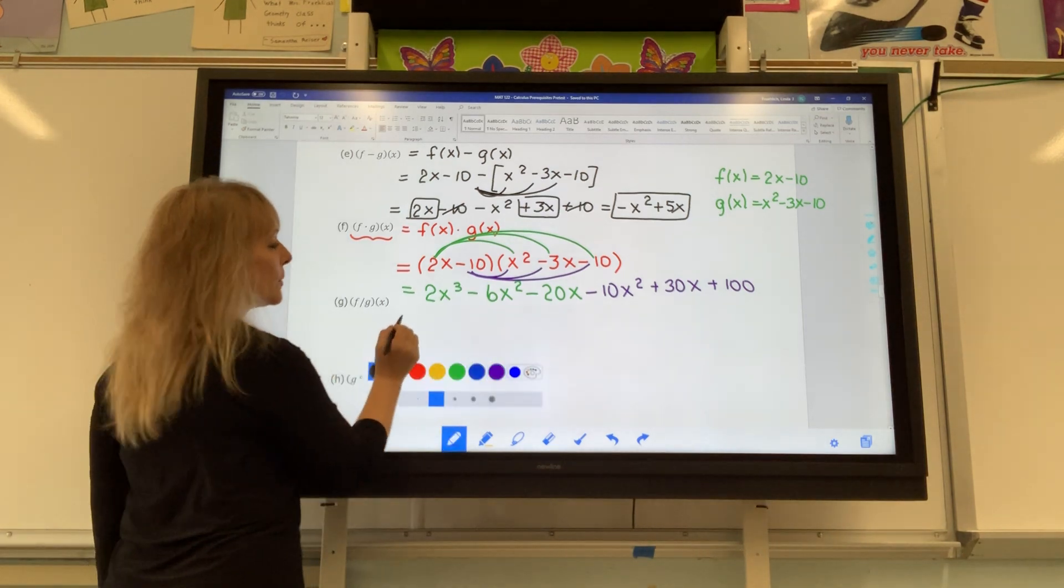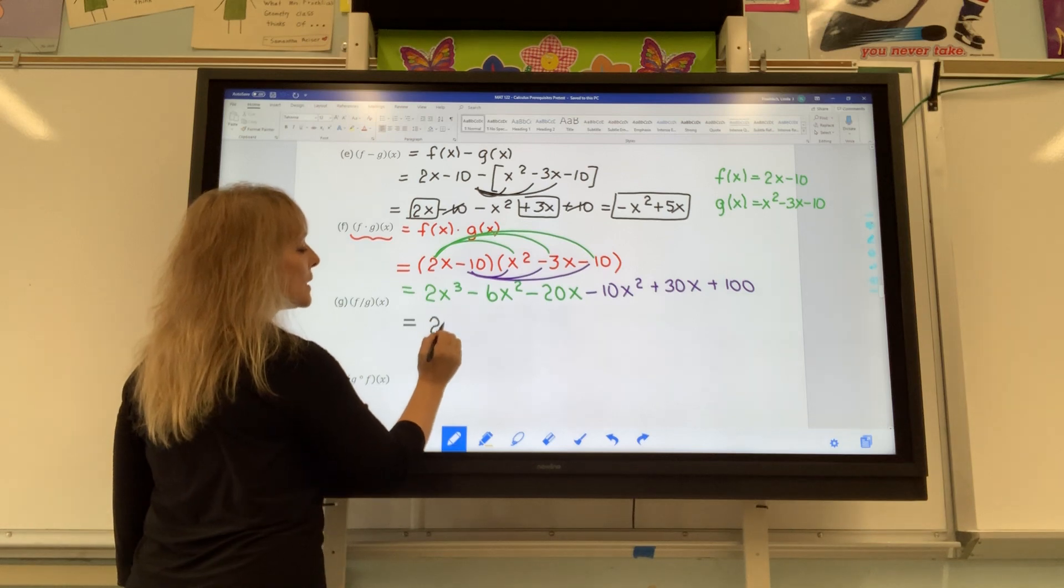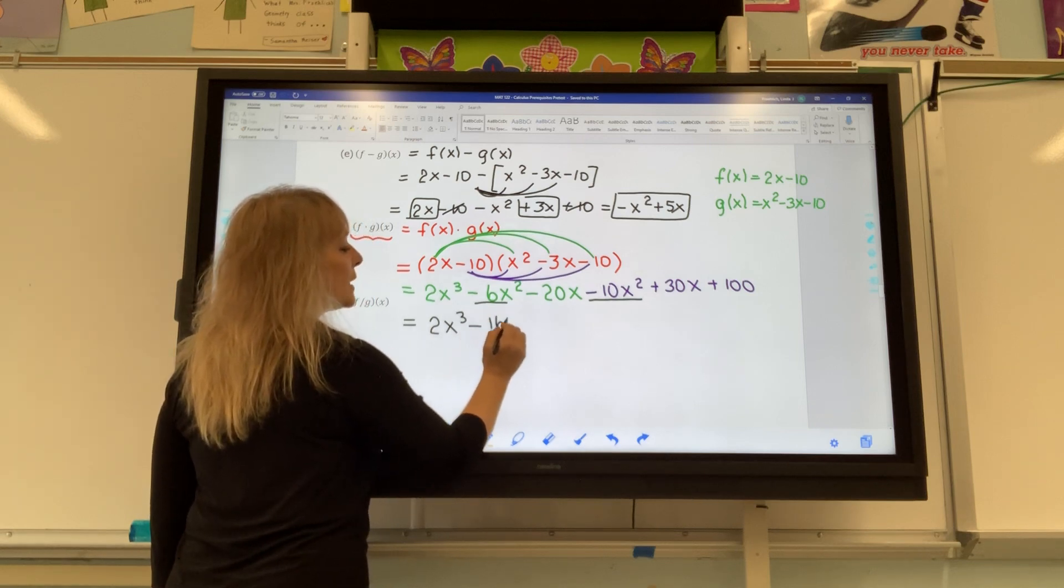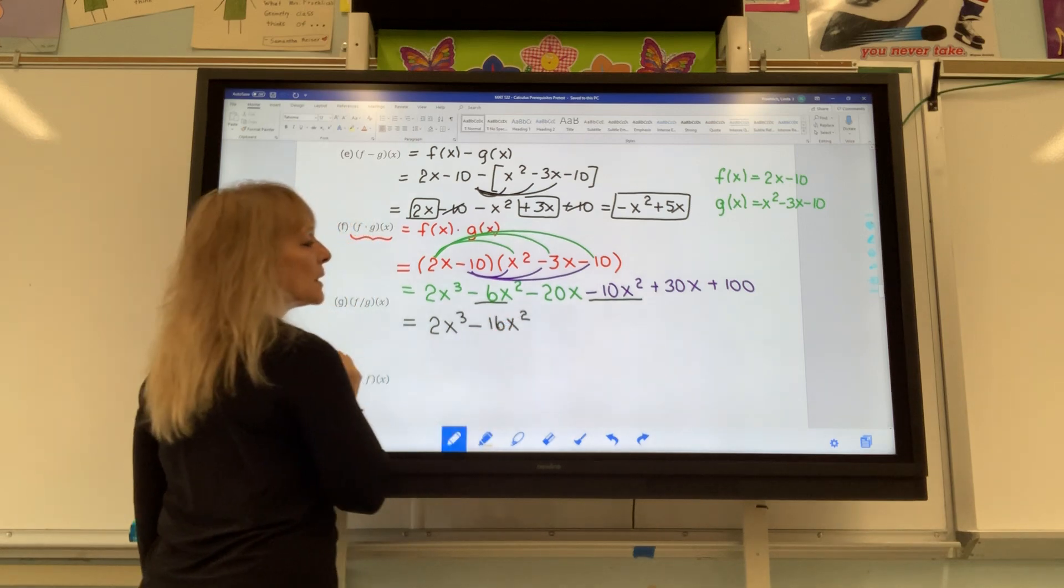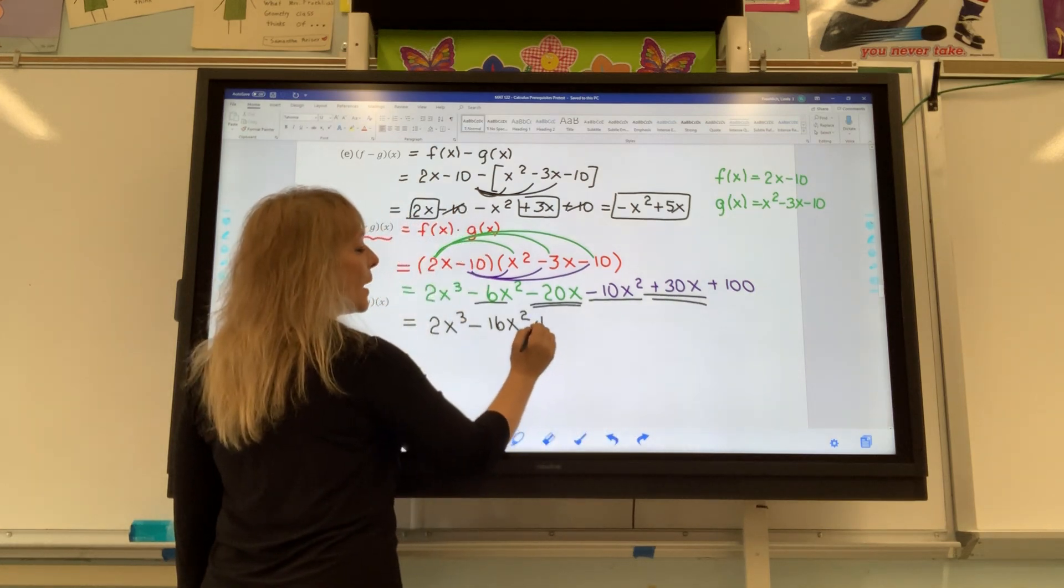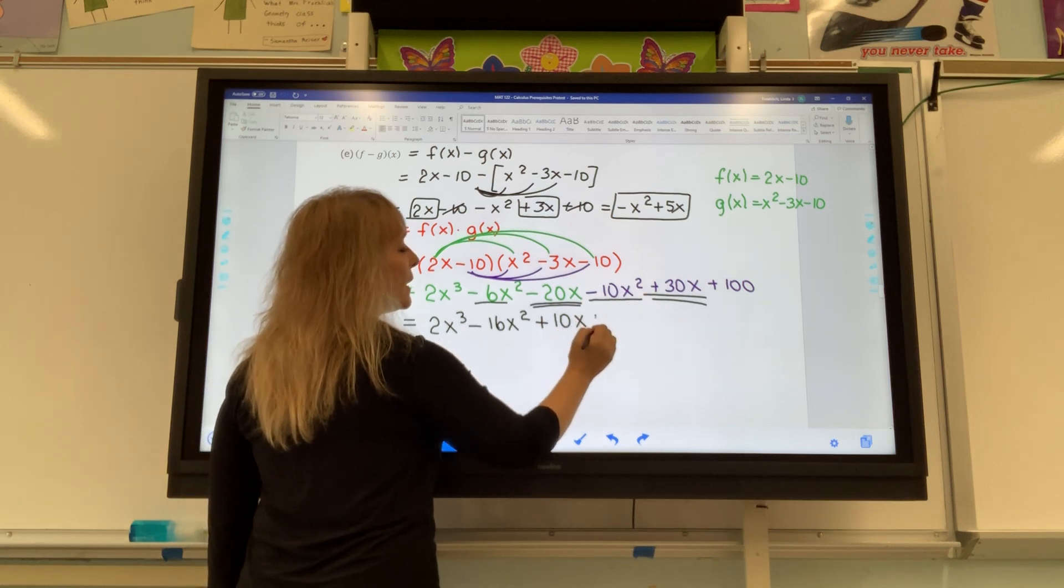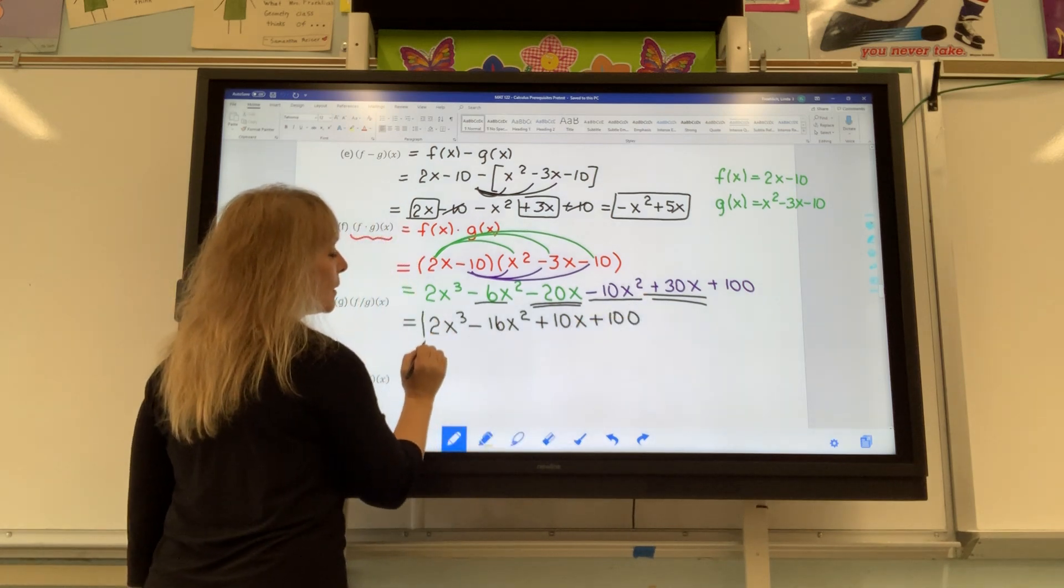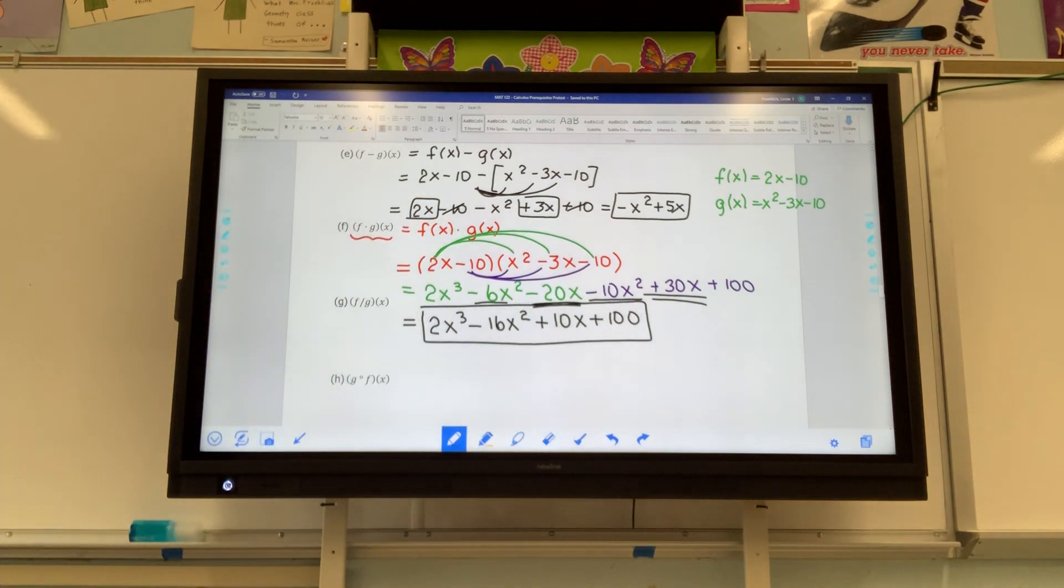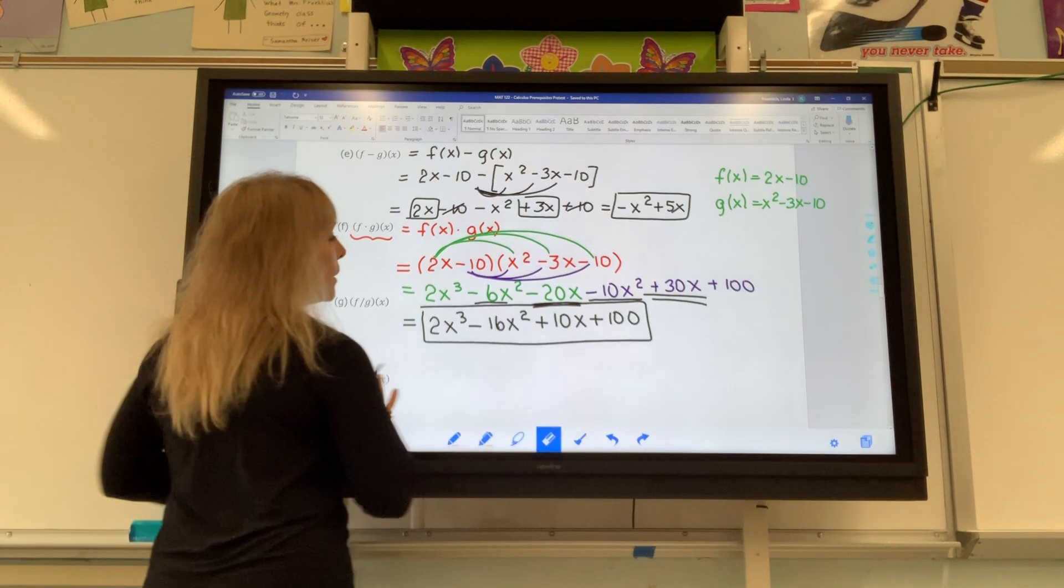If you combine like terms, that's your answer for letter F. Combining like terms, there is only one x to the third term, but there are two terms that are x to the second, and they combine to negative 16x to the second. There are two terms that are x terms, and they combine to positive 10x. And finally, the constant is 100. That's the answer for letter F.